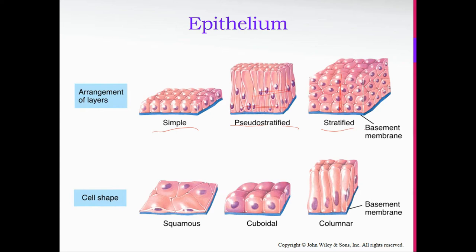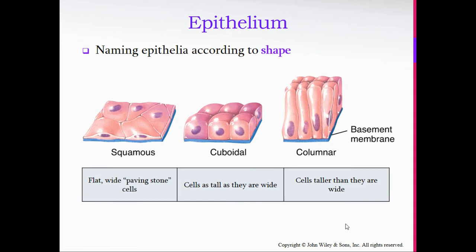You can also name epithelia by cell shape. A flat cell is referred to as squamous — wide, paving-stone-looking cells. I always think squamous looks like they're squashed. Cuboidal cells are roughly as tall as they are wide and have a cube shape, which is where their name comes from. And the very tall columnar cells are column-shaped — much taller than they are wide.